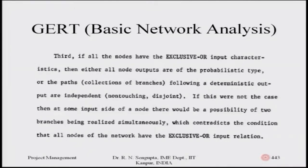The third important point is: if all the nodes have exclusive OR input characteristics, then either all node outputs are of probabilistic type, or the paths following a deterministic output are independent — meaning they are not touching and are not joined. If this were not the case, there would be the possibility of two branches being realized simultaneously, which is practically impossible in a GERT network.